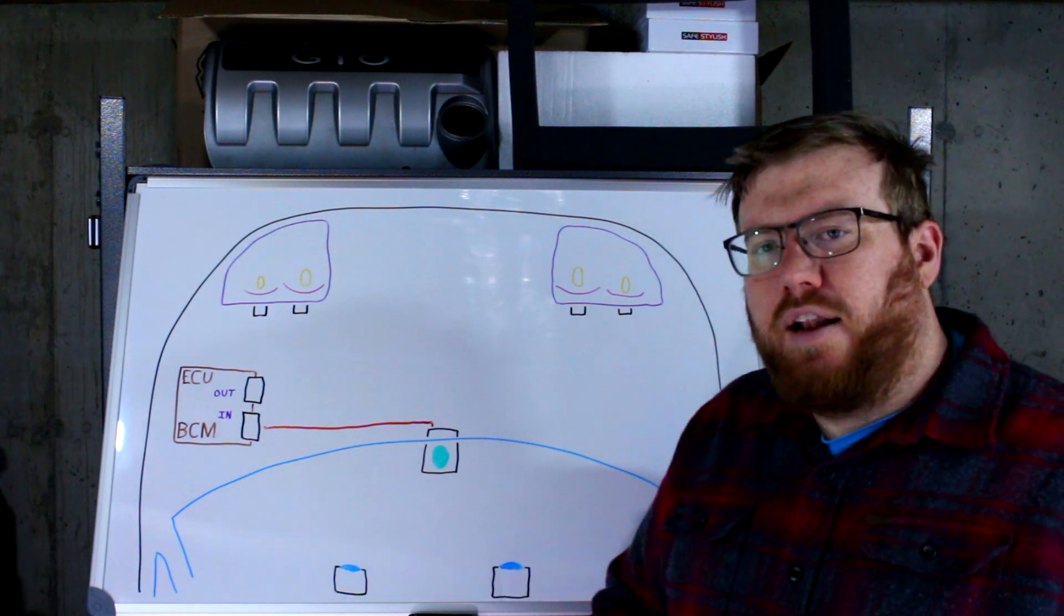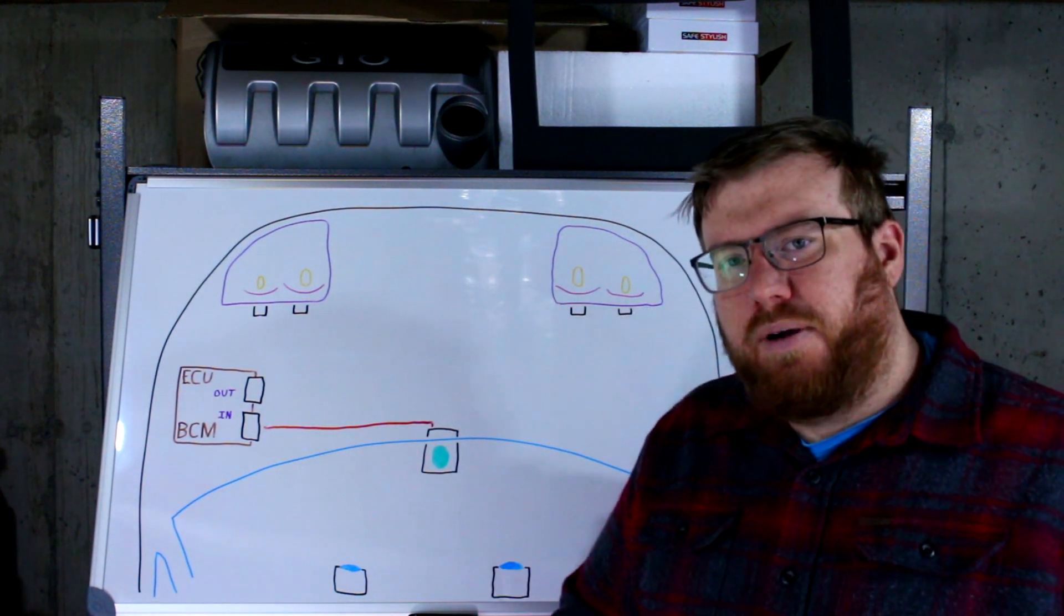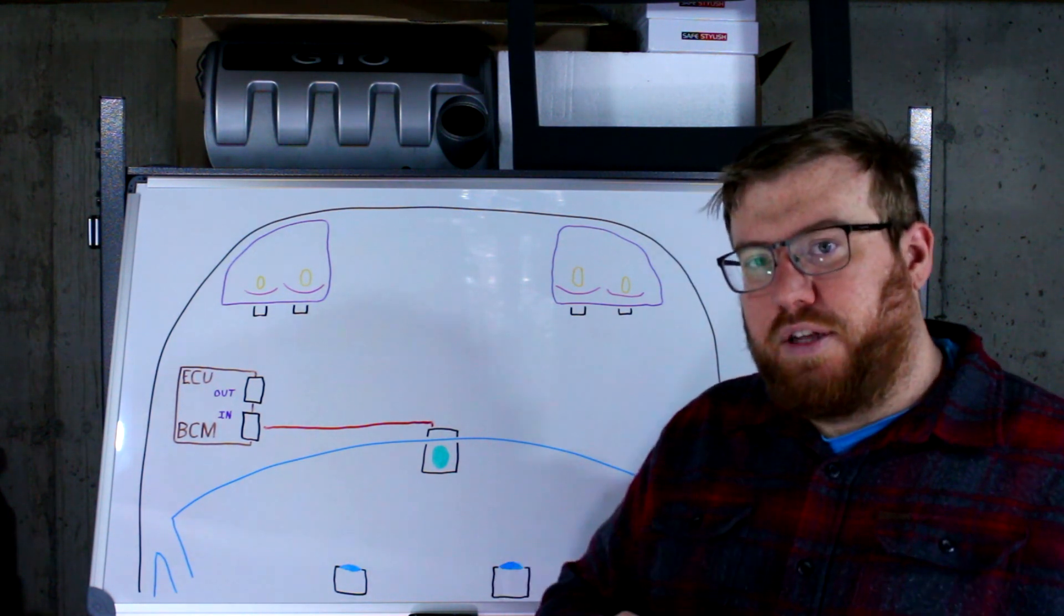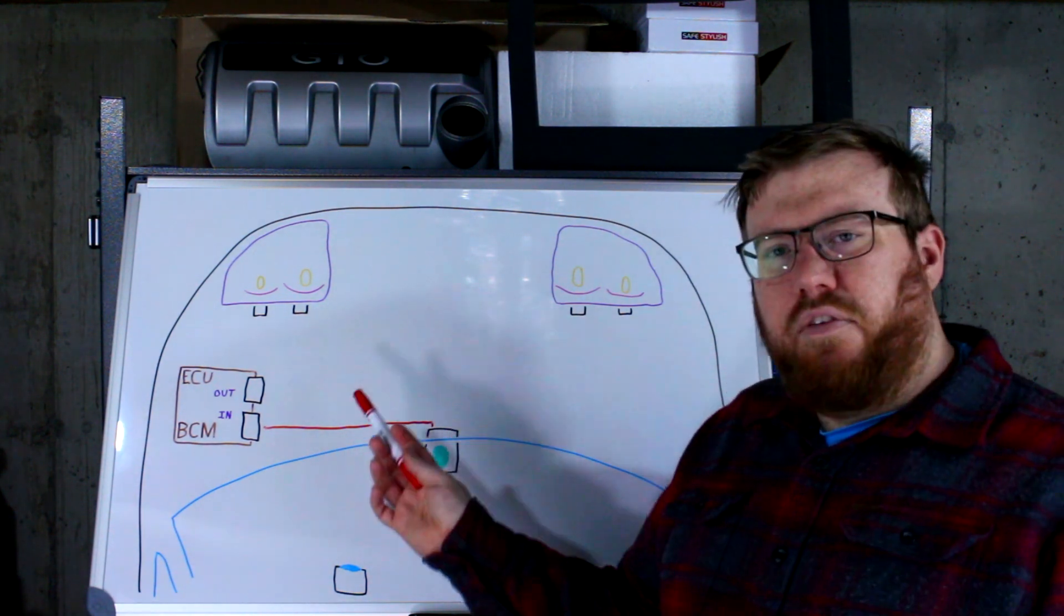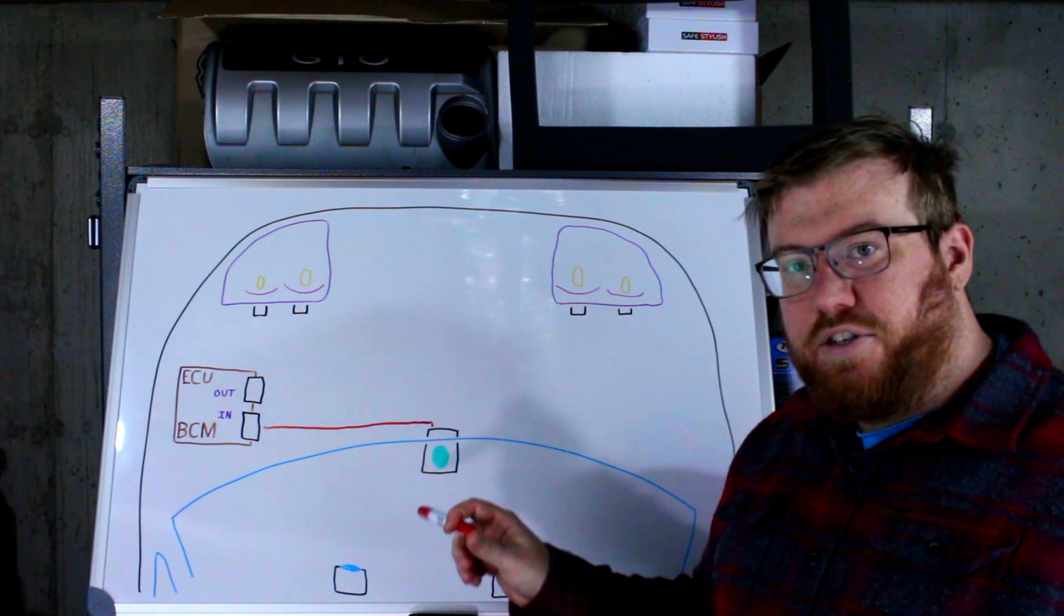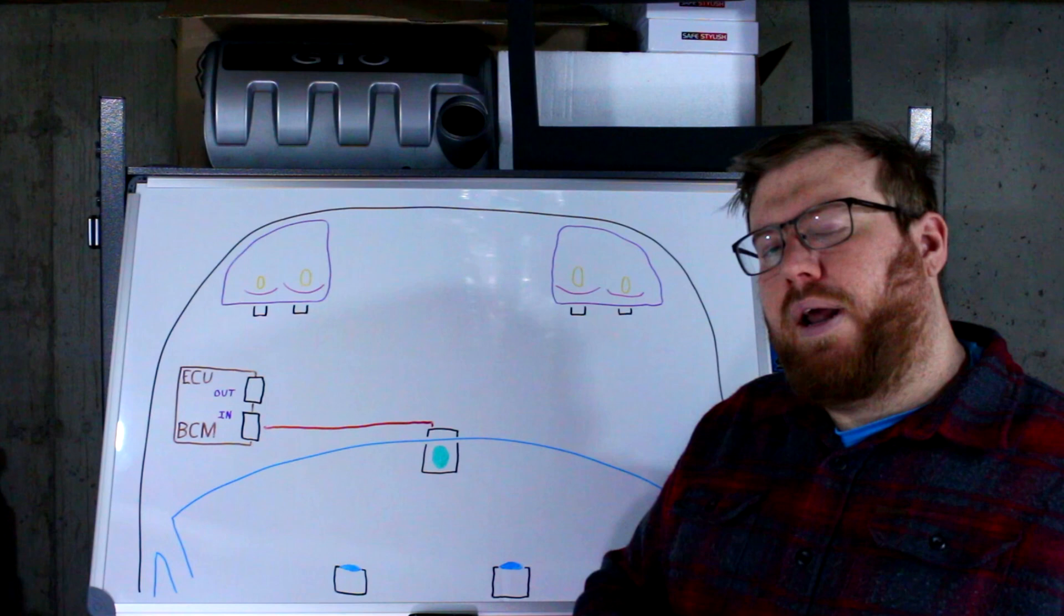Automatic high beams are a much newer technology than the automatic headlights that we talked about in the previous video, which I recommend going back to watch first if you came to this video first because it's going to cover some of the basics of this and it'll explain why this daylight sensor can't be used at all in automatic high beams.